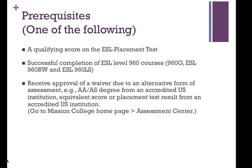The prerequisites for this course are as follows — only one of these needs to apply. You need to have a qualifying score on the ESL placement test, or you have to have successfully completed all of the ESL Level 960 courses, or you can receive an approval of a waiver due to an alternative form of assessment. For example, you may already have an associate degree from an accredited U.S. institution, or an equivalent score or placement test result from another institution. In any case, go to Mission College homepage assessment center to get more details.